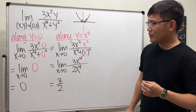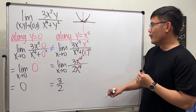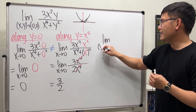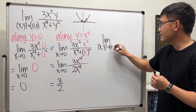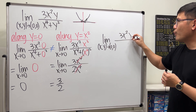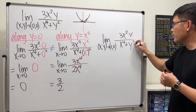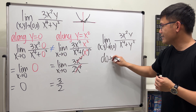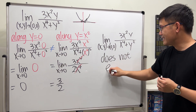Since the limit along y = 0 gives 0, and the limit along y = x² gives 3/2, and 0 ≠ 3/2, we can conclude that the limit as (x, y) → (0, 0) of 3x²y over x⁴ + y² does not exist.